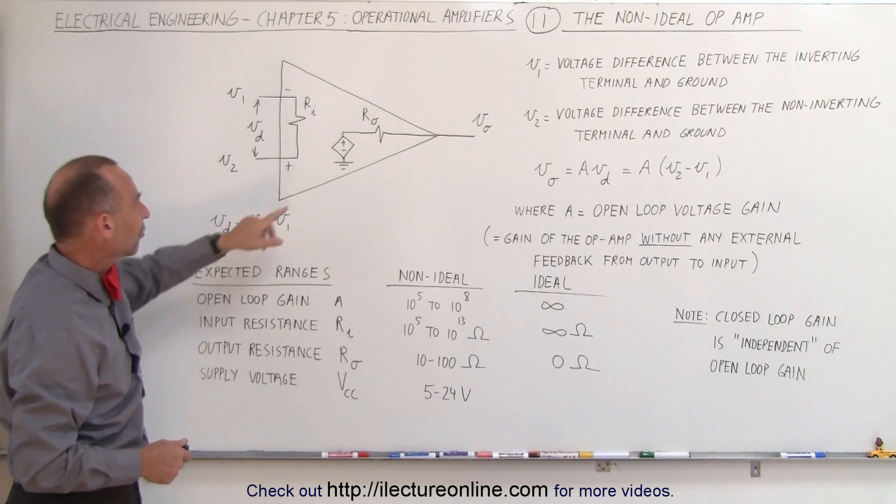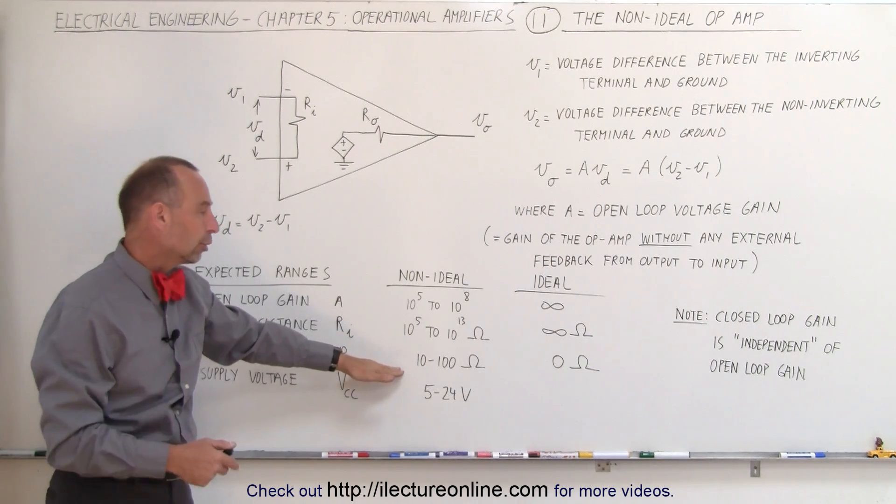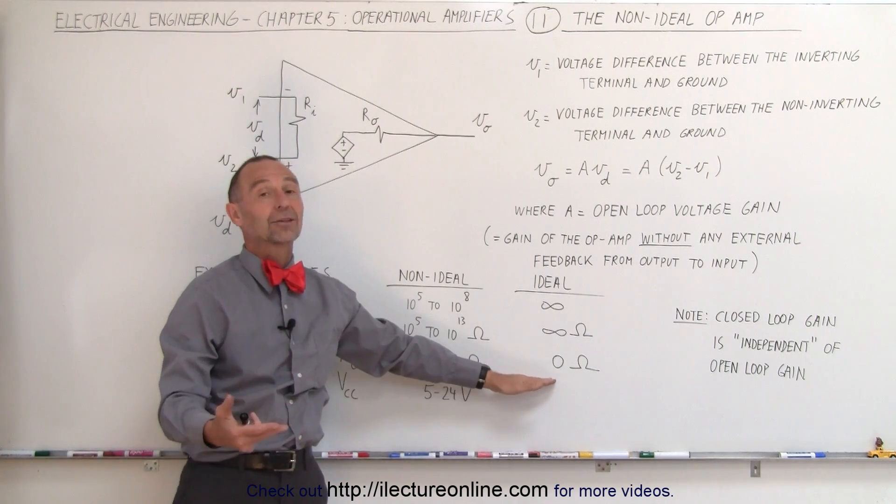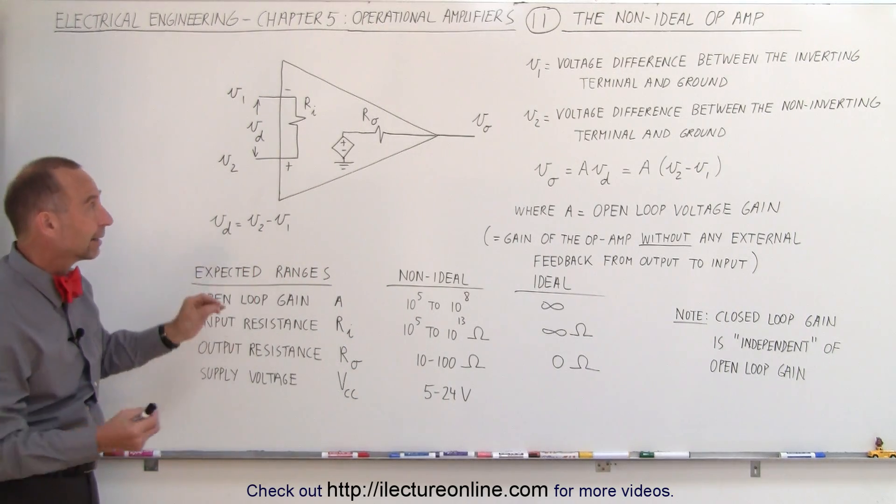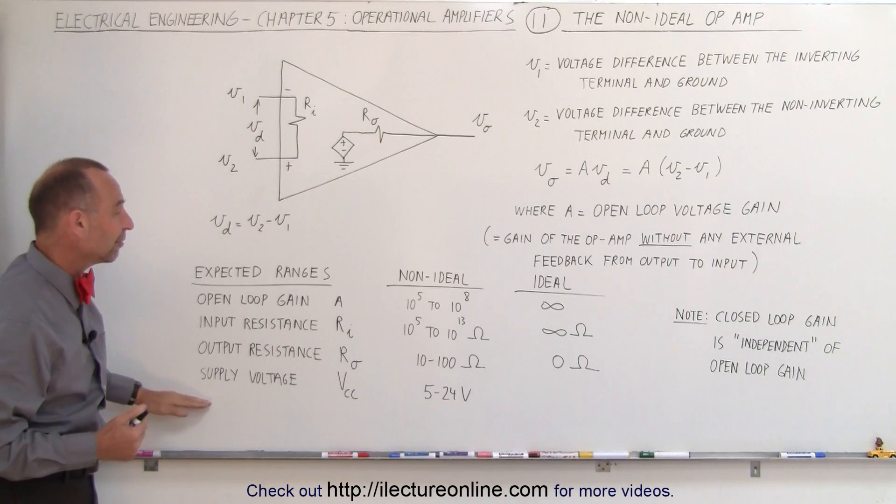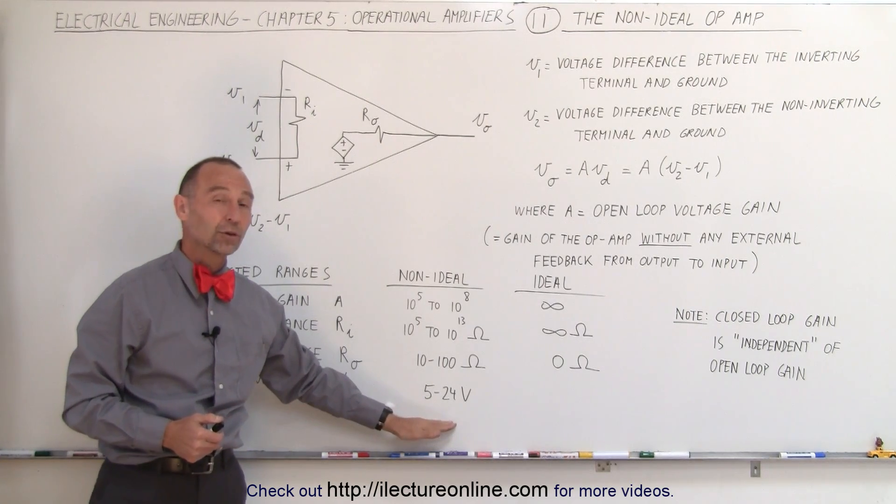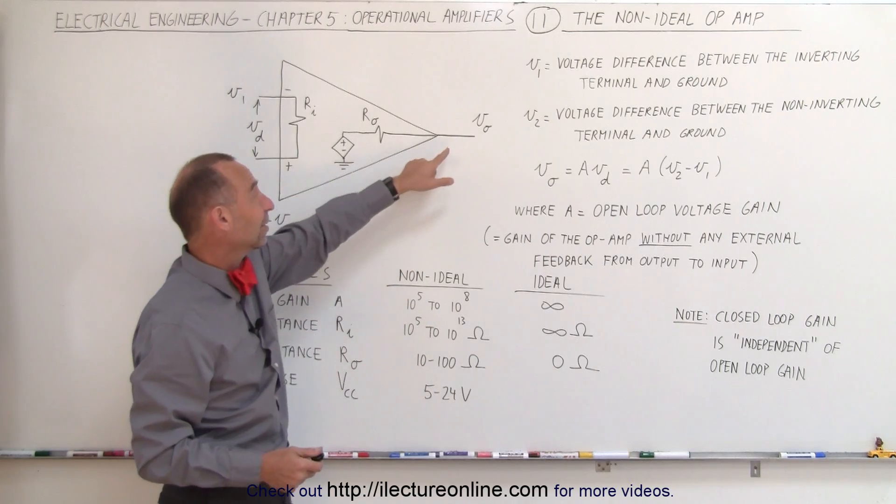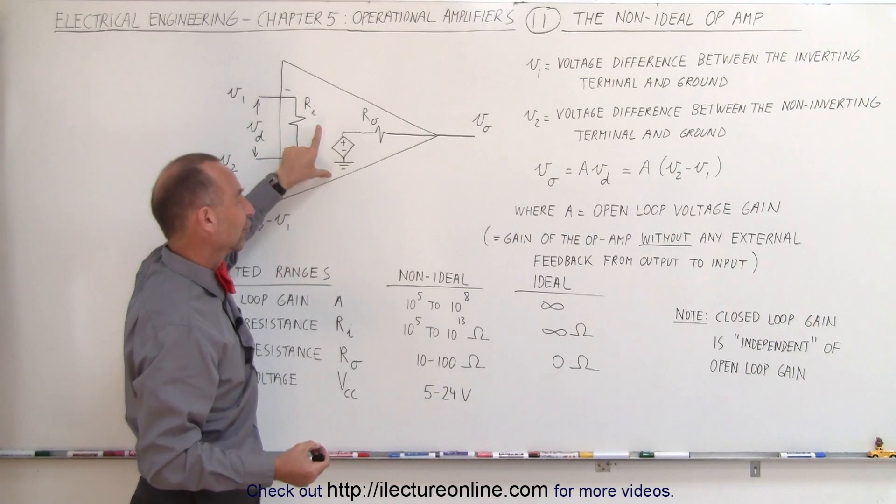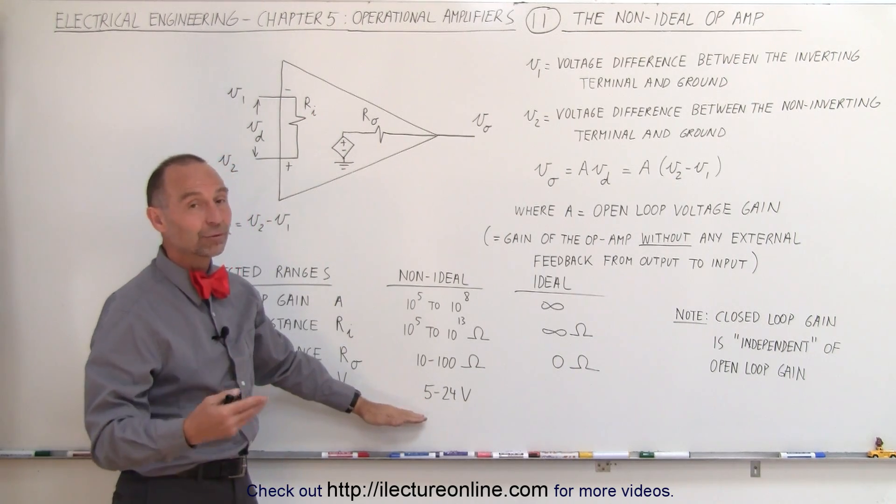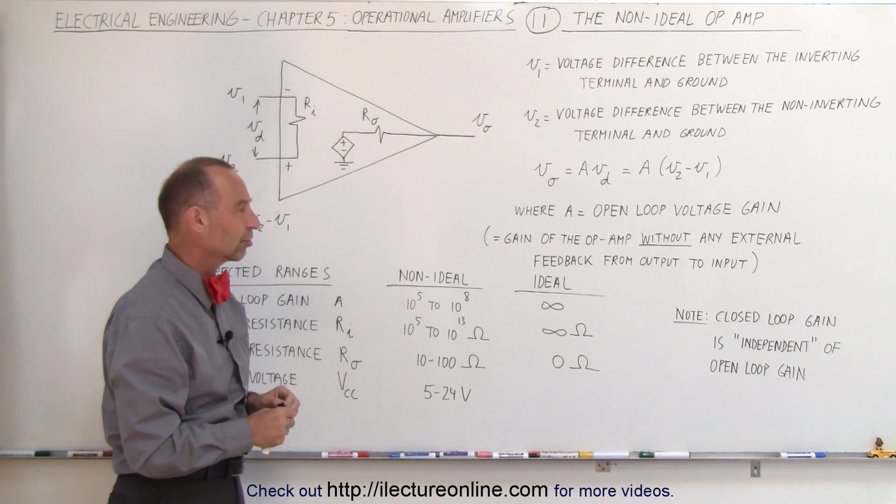The output resistance here on the output voltage is typically very small, anywhere from 10 to 100 ohms, and ideally we would like it to be zero ohms, no resistance whatsoever. And finally, the voltage supply that powers the operational amplifier is typically set to somewhere between 5 and 24 volts. And as you would then realize, then, that the output voltage cannot exceed the voltage that is supplied by the voltage supplies, so typically the output voltage cannot exceed 5 to 24 volts depending upon what the voltage connection is there.